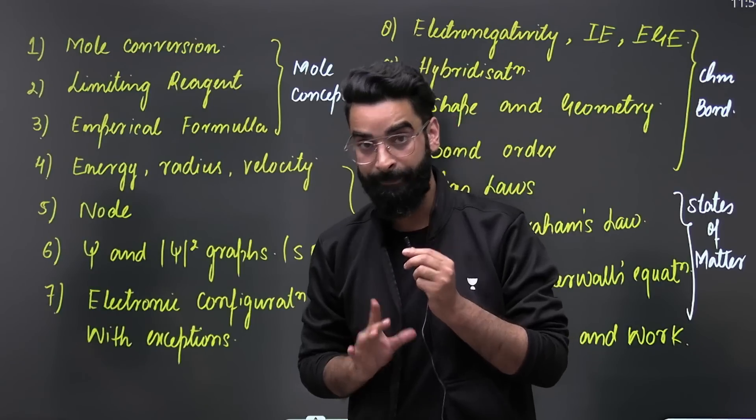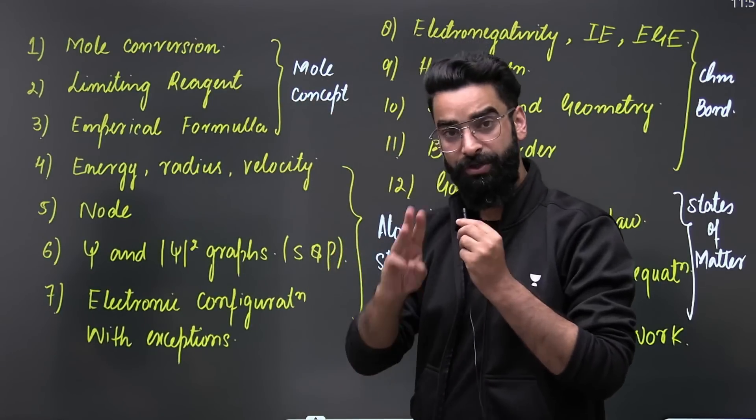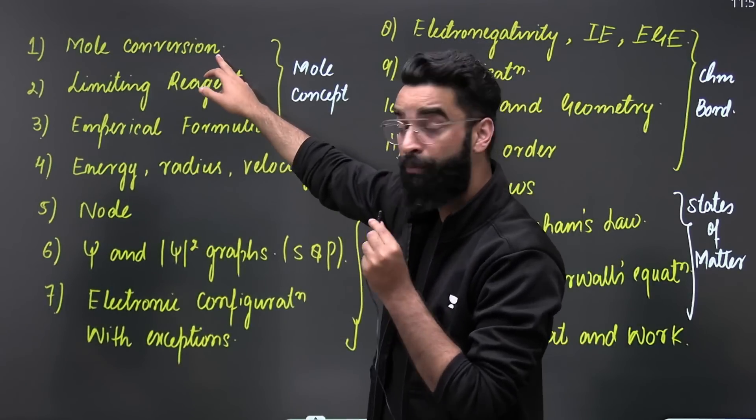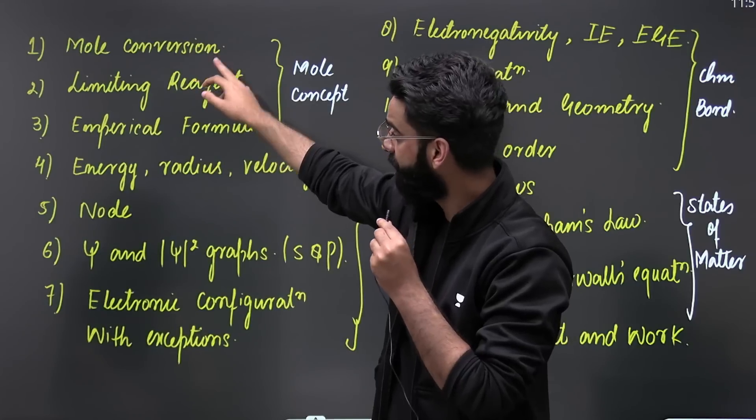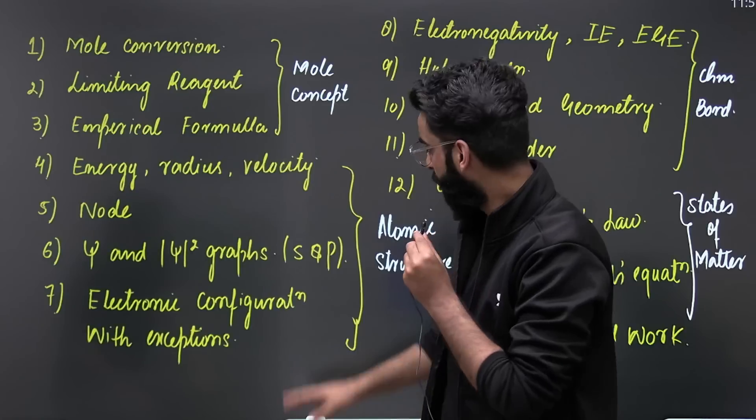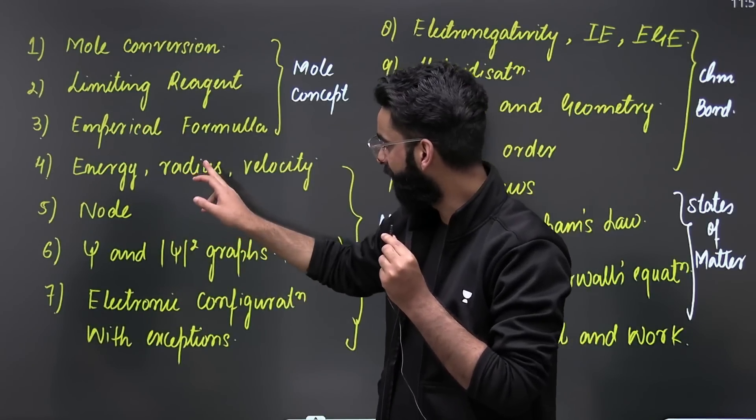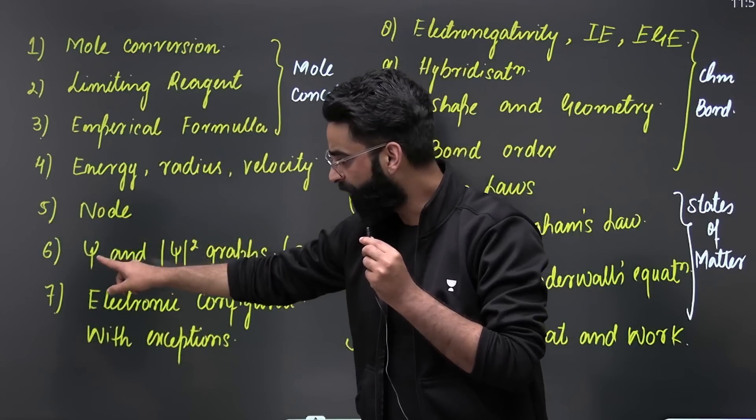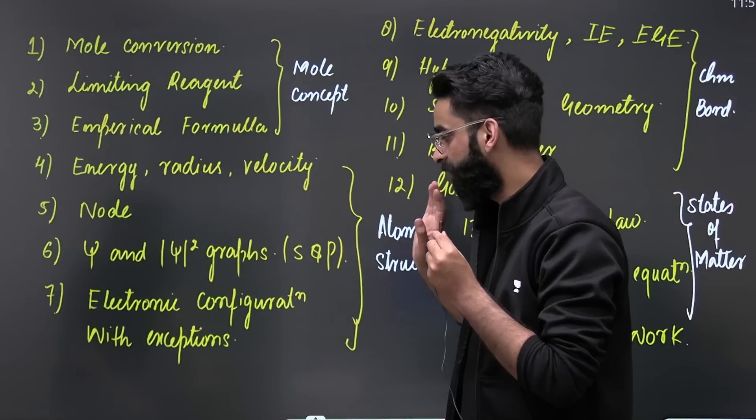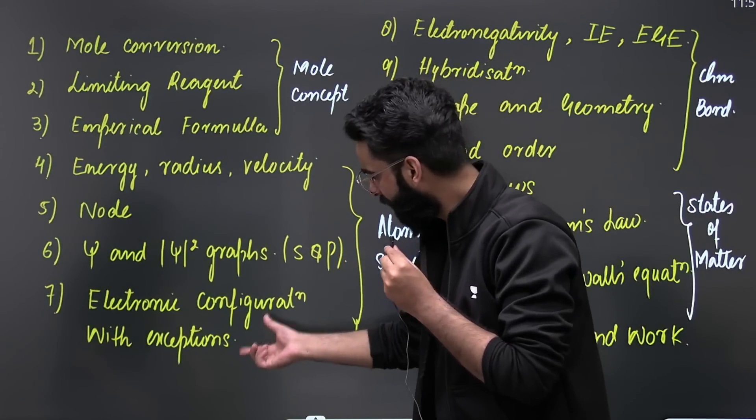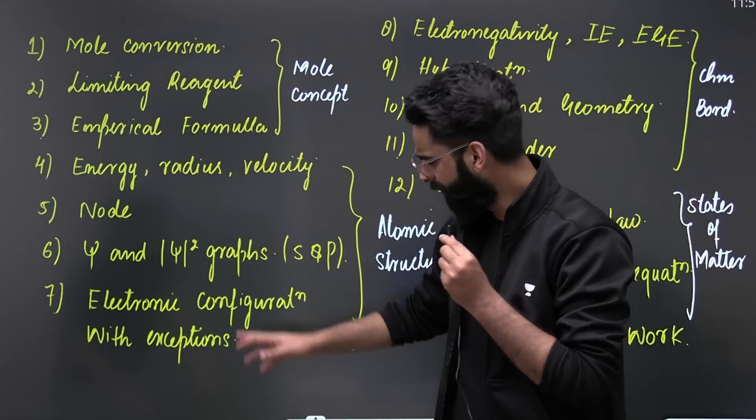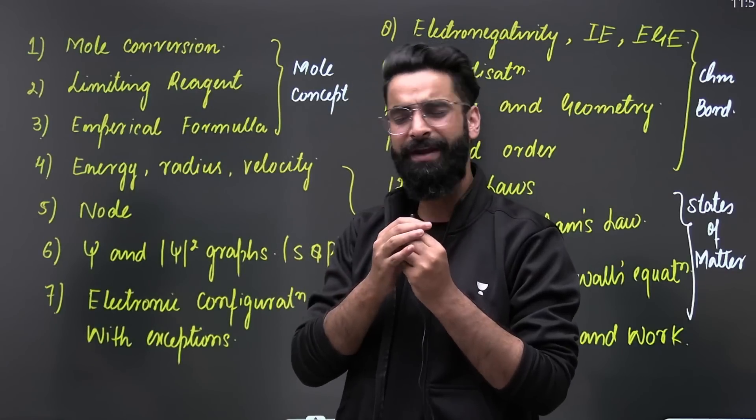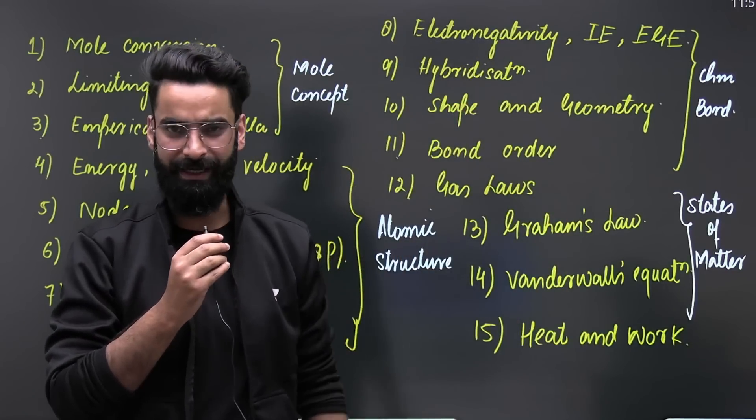Starting from the mole concept, I would want you guys to study three topics in particular: mole conversion, limiting reagent, and empirical formula. From the chapter atomic structure, go for energy, radius, and velocity-based questions. Study the nodes properly. Apart from nodes, go for ψ and |ψ|² graphs for s and p orbitals. There is one more topic in atomic structure - that's your electronic configuration. Do have a look on electronic configuration as well and some exceptions like copper, chromium, gadolinium, and all the other exceptions in the electronic configurations.